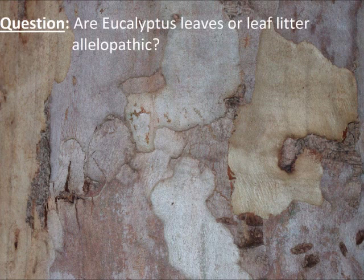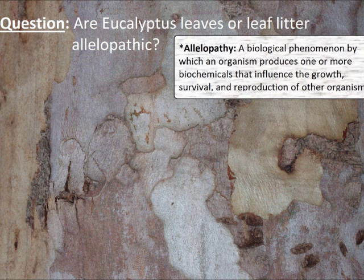First, let's pose our question: are eucalyptus leaves or leaf litter allelopathic? Allelopathy is a biological phenomenon by which an organism produces one or more biochemicals that influence the growth, survival, or reproduction of other organisms. In reality, this could be positive or negative, but in this test, we're going to focus only on the negative.